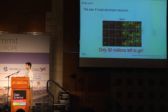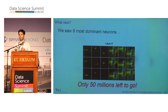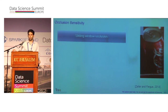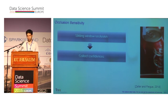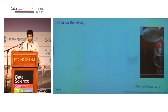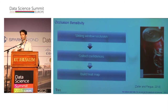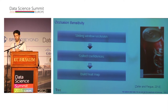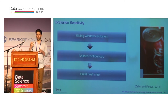We want a method that gives us, in one image, an indication of what the network found as important — what the network actually learned. This brings us to the second method: occlusion sensitivity. In this method, we use a sliding window to hide each different part of the image, and collect the recognition confidence that each occluded image received. The output is a heat map indicating what the network found as important. The core principle is that hiding an insignificant area keeps confidence high, while hiding a significant part causes confidence to drop.